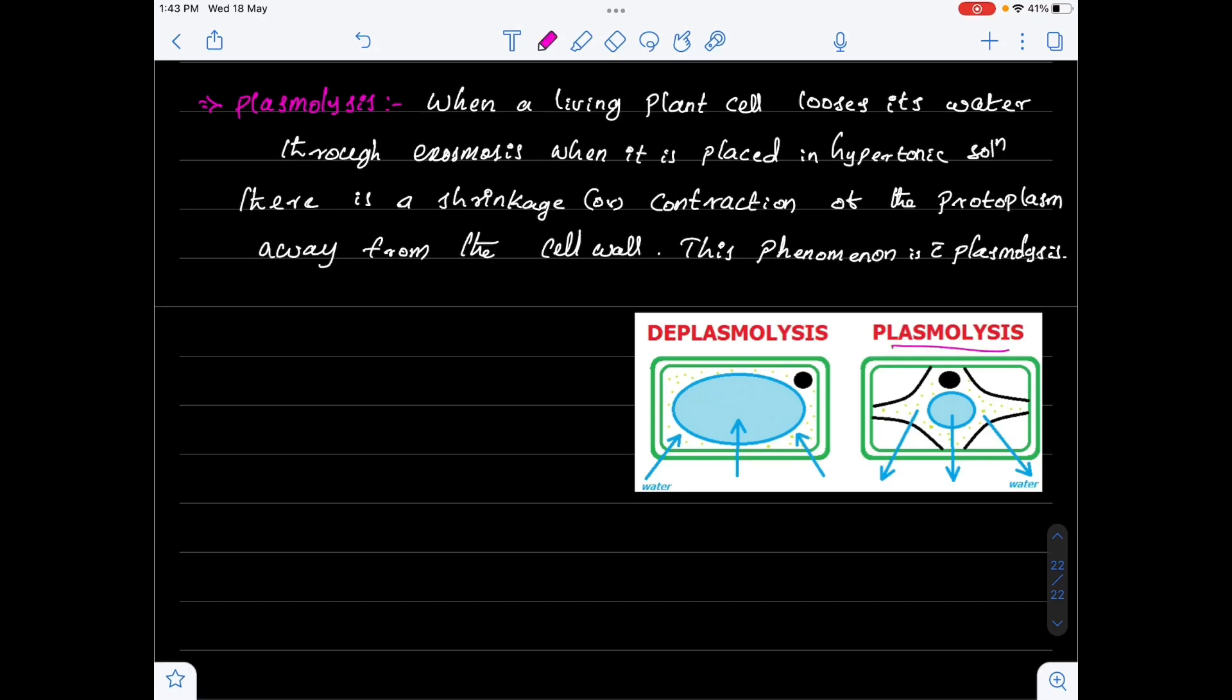And this phenomenon is called Plasmolysis. Now, look at this diagram here. This is how the protoplasm is moving away from the cell when the osmotic exit of water outside the cell takes place. This happens when a plant cell is placed in hypertonic solution and we are calling this process as Plasmolysis.